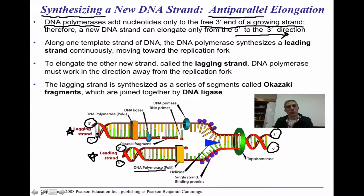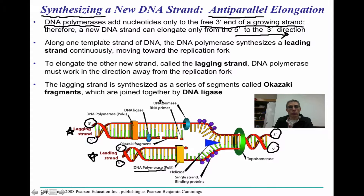The lagging strand, on the other hand, is where things get more difficult. Remember, we can only move from the 5' to 3' direction and only add on the 3' end. Because of that, we have to add nucleotides to this side of the DNA molecule in segments. What we're going to look at is something called DNA primase. That primase is important because it dictates to the lagging strand where to introduce that RNA primer—a series of 10 to 15 RNA nucleotides that indicate to the polymerase where it needs to add nucleotides.